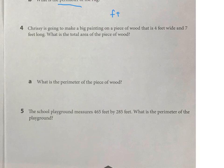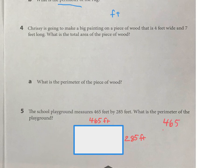And then finally, we're talking about the school playground, and that is 465 feet by 285 feet. So you're just doing some addition all the way around to figure out the perimeter of that playground.